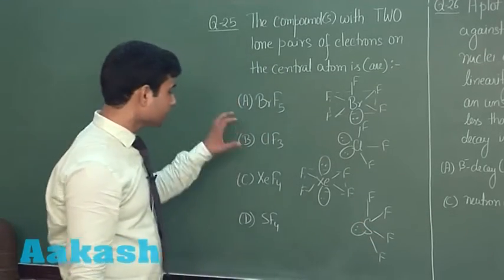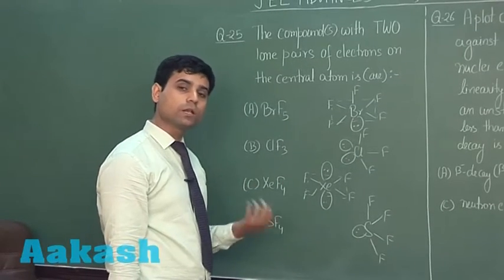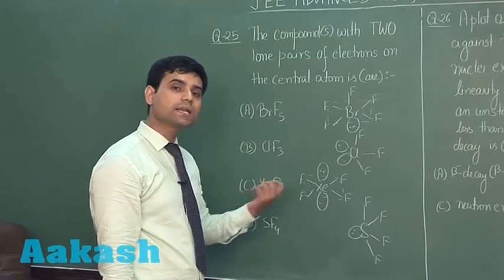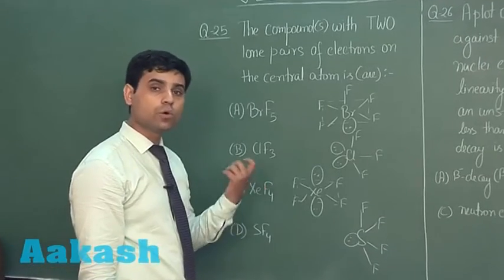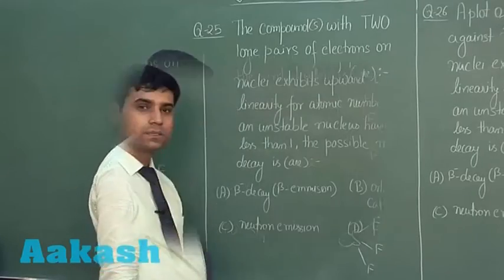So, among these four options, only ClF3 and XeF4 are those molecules in which the central atom has two lone pairs. So, the correct answer for this question is option B and option C.